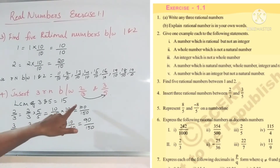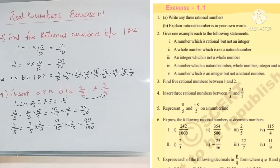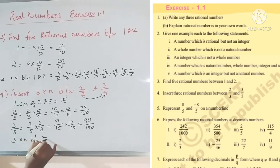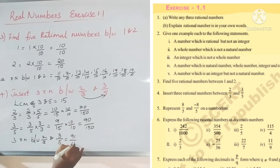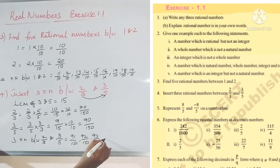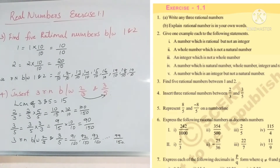Between ninety by one-fifty and one hundred by one-fifty, ten numbers are available. Three rational numbers between two by three and three by five are: ninety-one by one-fifty, ninety-two by one-fifty, ninety-three by one-fifty — and we can go up to ninety-nine by one-fifty. Like this we can insert rational numbers between any two numbers.